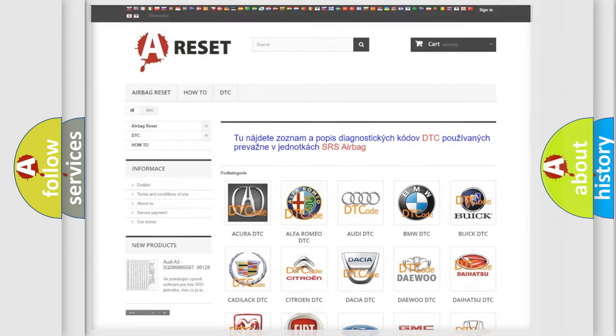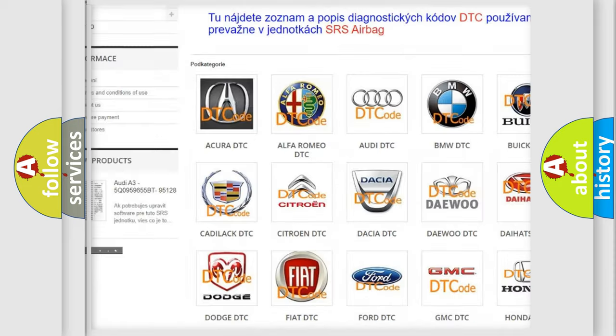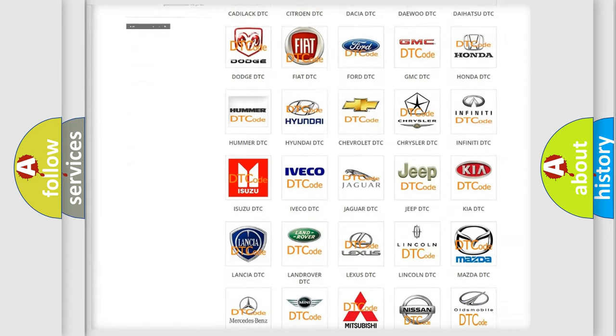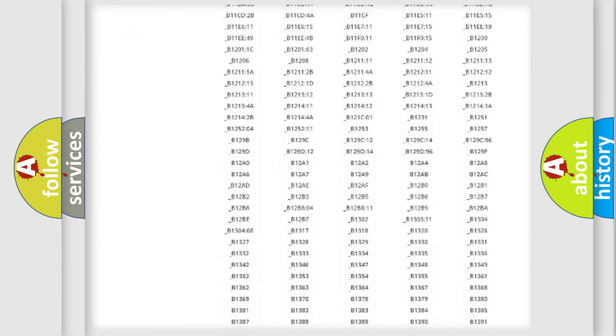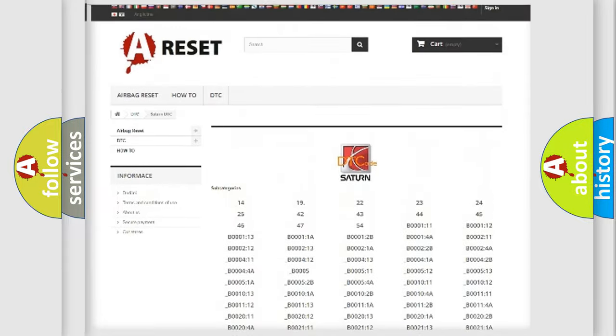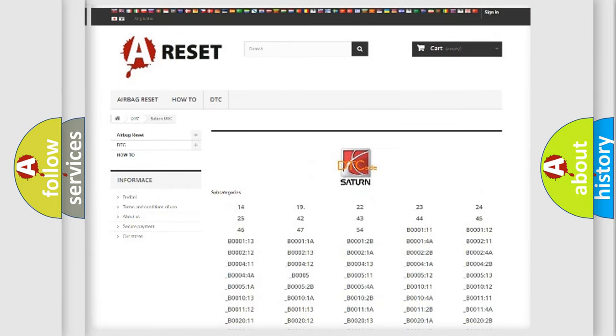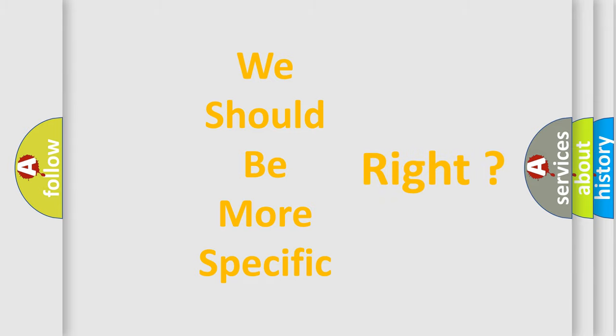Our website airbagreset.sk produces useful videos for you. You do not have to go through the OBD2 protocol anymore to know how to troubleshoot any car breakdown. You will find all the diagnostic codes that can be diagnosed in SAT and vehicles, also many other useful things. The following demonstration will help you look into the world of software for car control units.